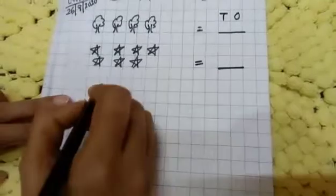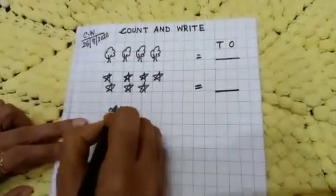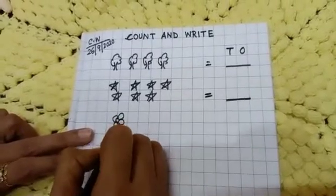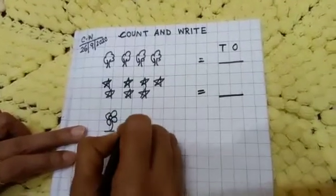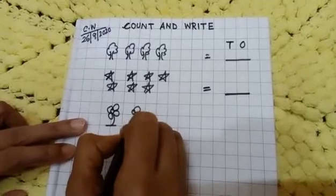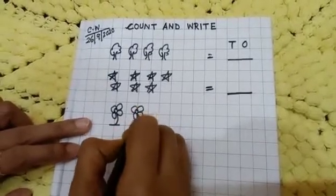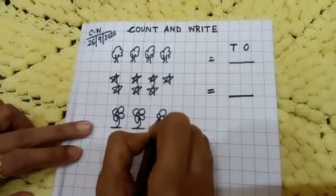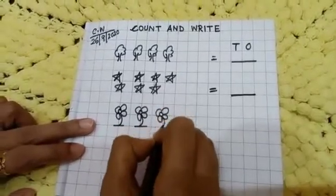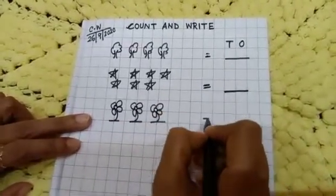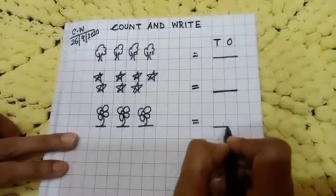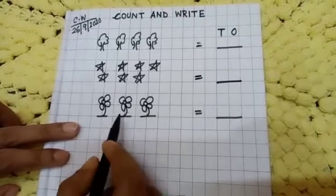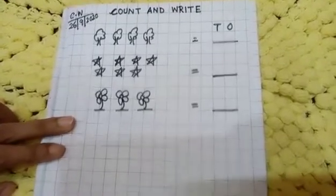Okay children, then here I am drawing flowers. Okay, so here you count how many flowers are there? Count and write. So how many flowers are there? Give you an equal sign and dash. So how many flowers are there? Count and write here. Okay.